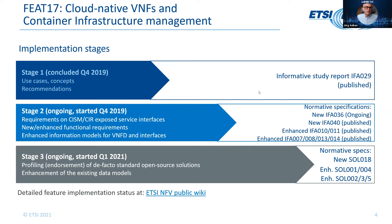How does the implementation look across stages? In Stage 1, which specifies use cases, concepts, and recommendations in a study report which is informative — that is IFA 29 — that work has been concluded and published end of 2019. Then following end of 2019, we started with the Stage 2 implementation, which specified requirements on the new functions of the CISM and CIR.